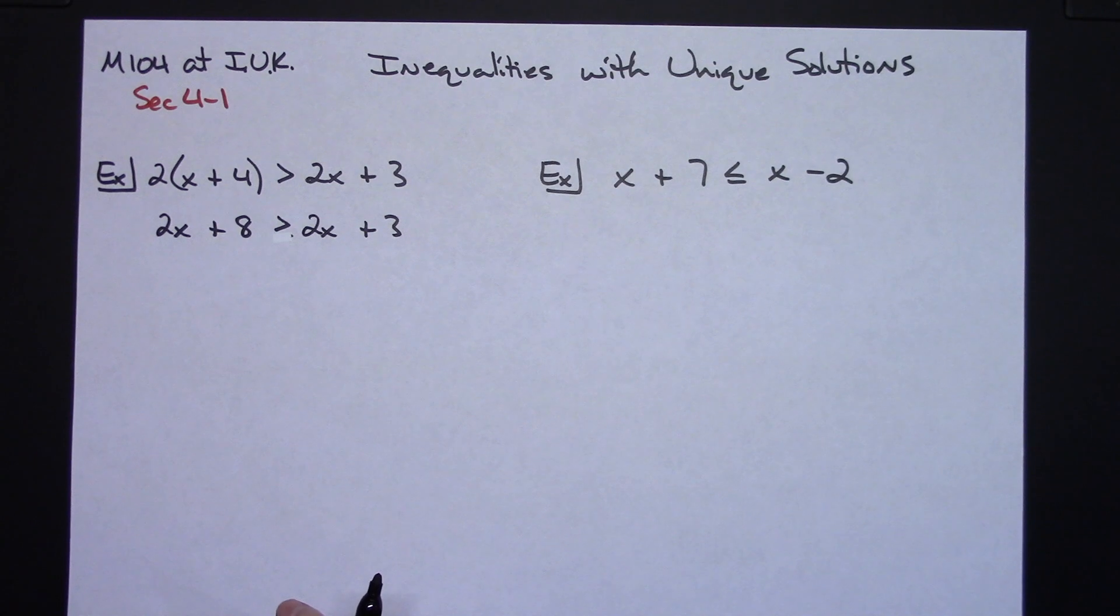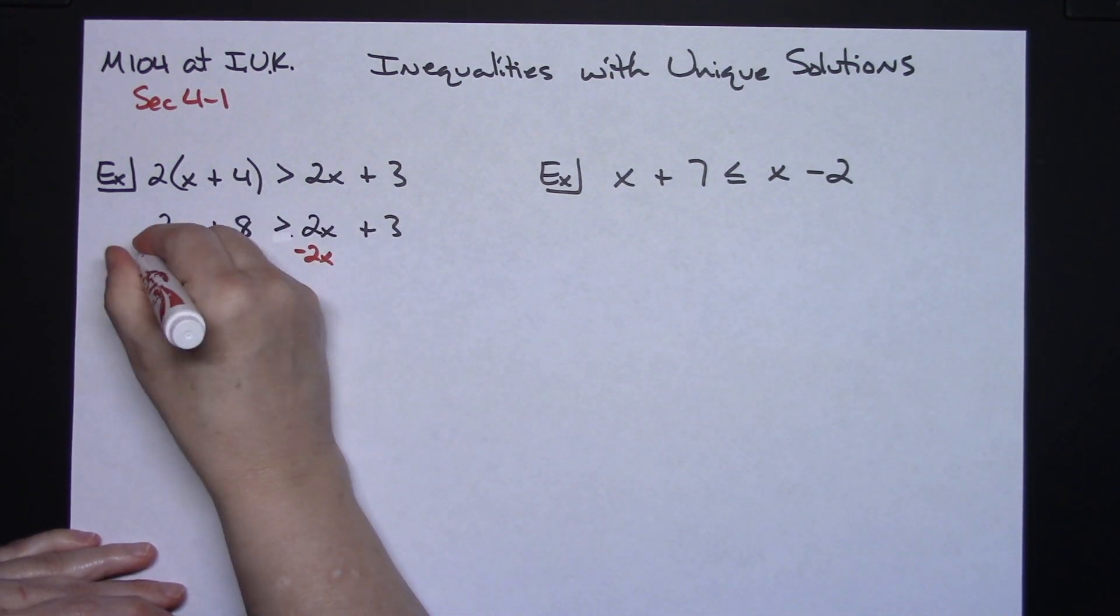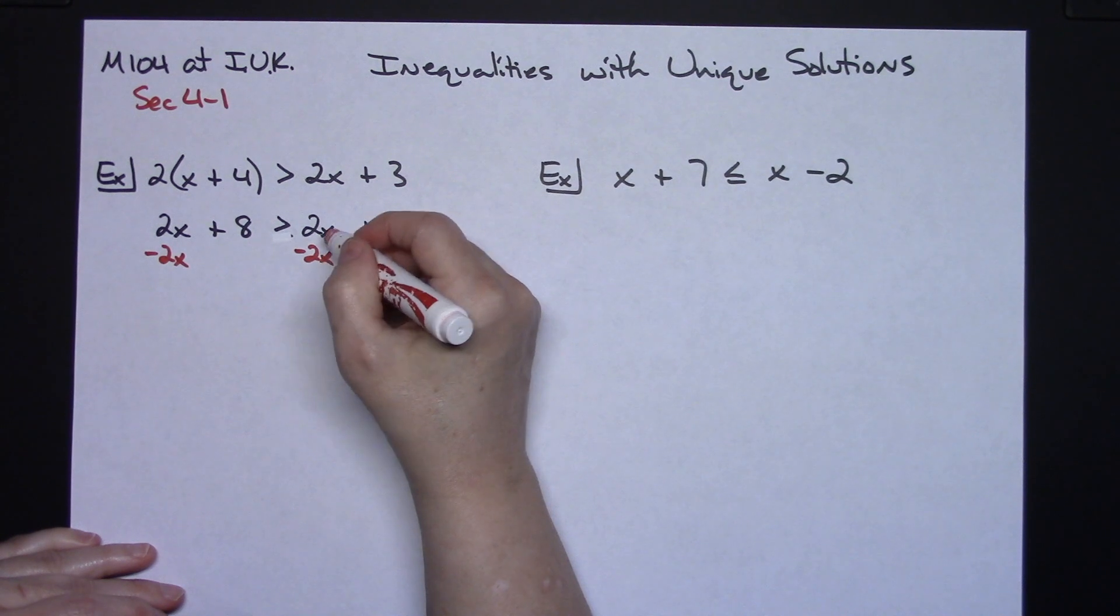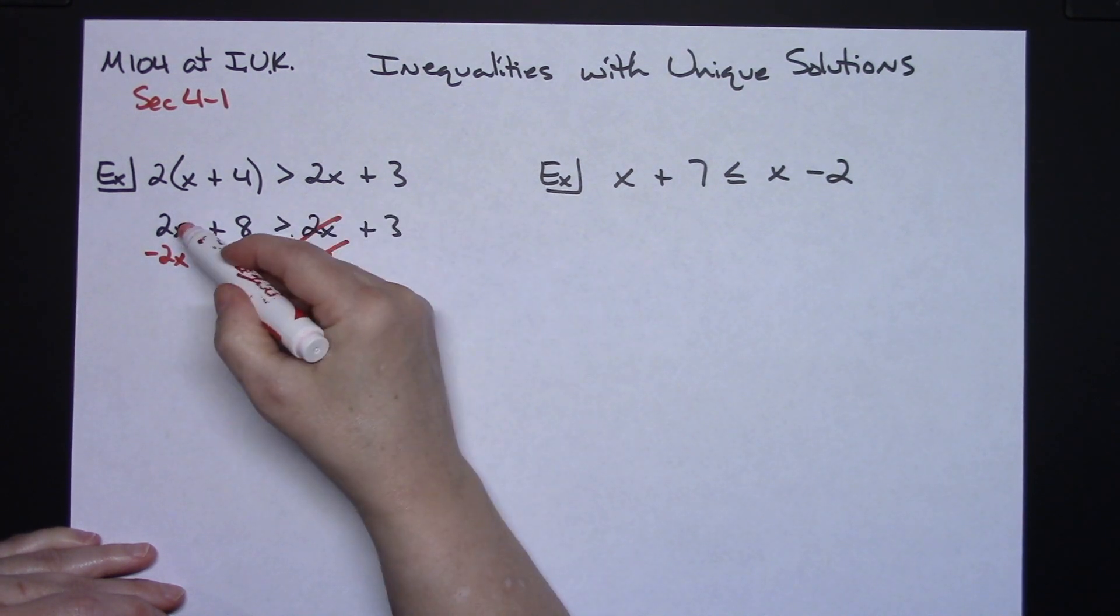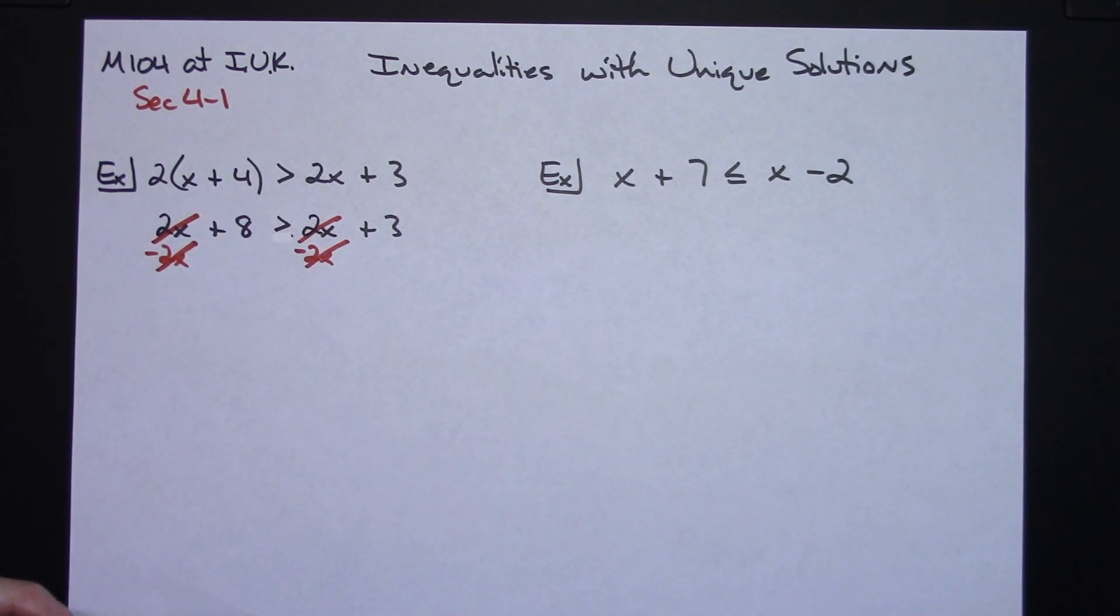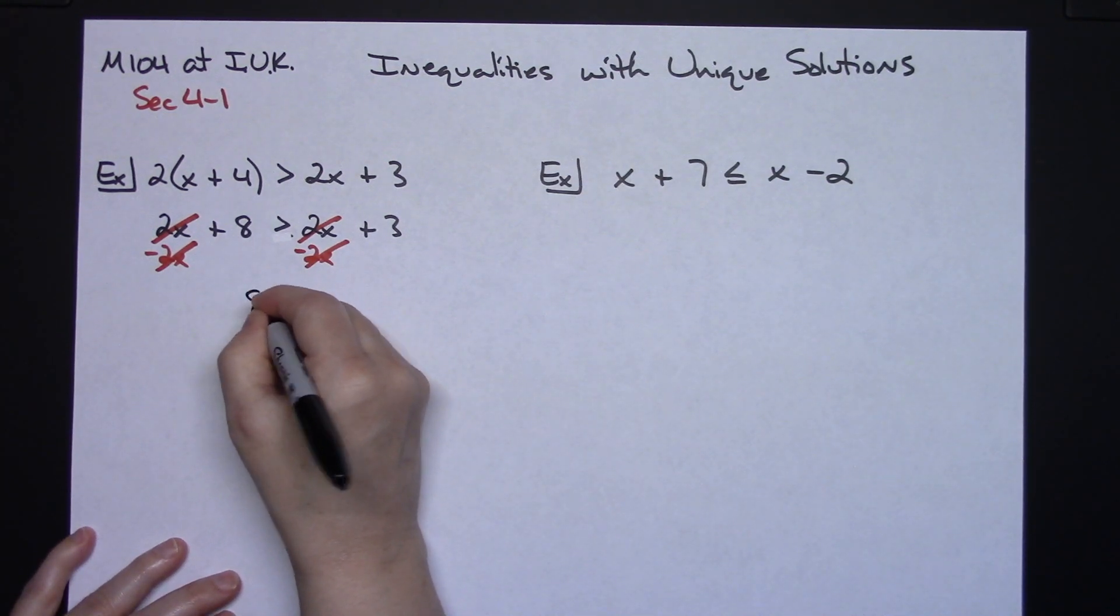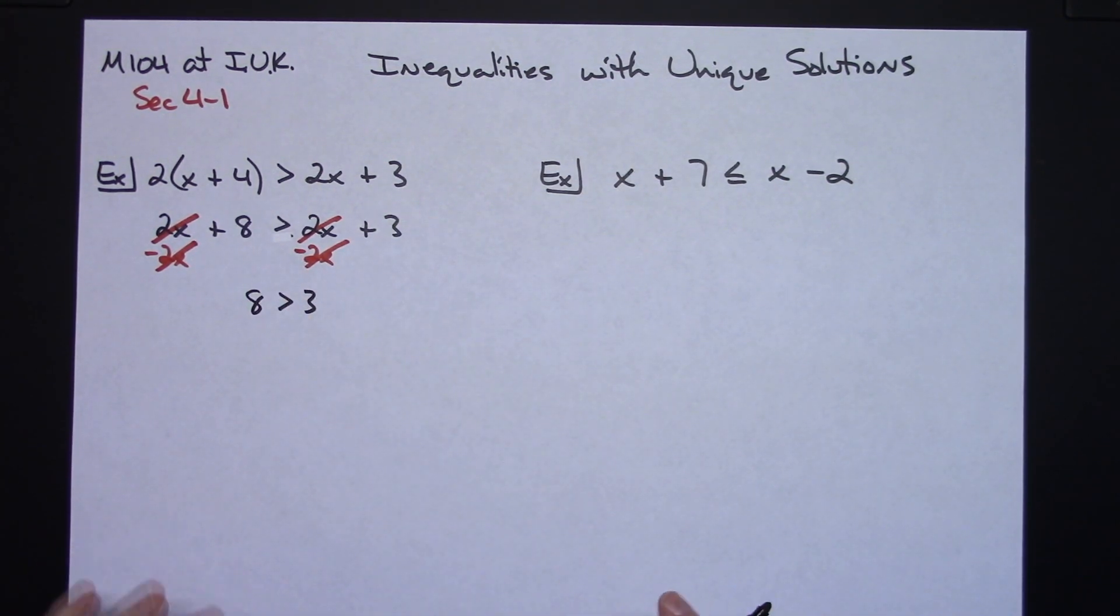At this point we generally move all of our x's to the left. So I'm going to subtract 2x from both sides. Well, 2x minus 2x on this side makes it fall out, and 2x minus 2x makes it fall out over here as well. So all of the x's just fell out of the equation.